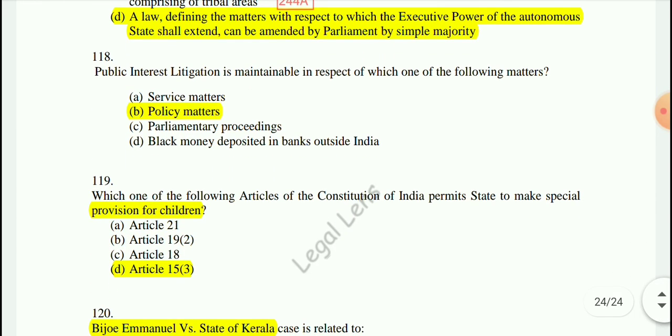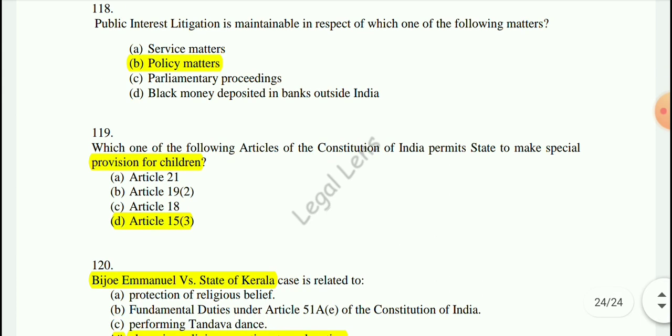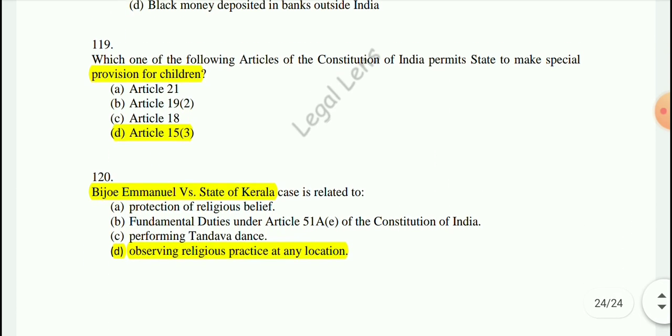Question 119: Which article of the Constitution permits the state to make special provision for children? The answer is Article 15, Clause 3.